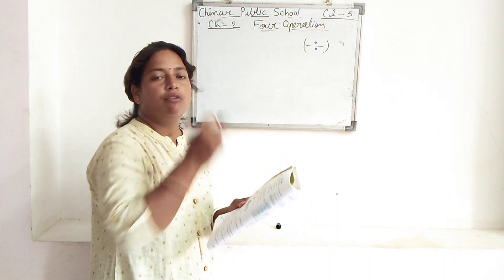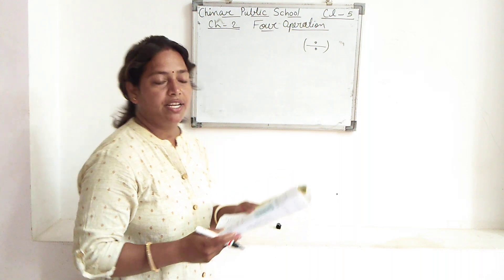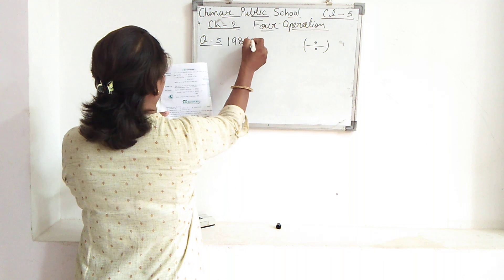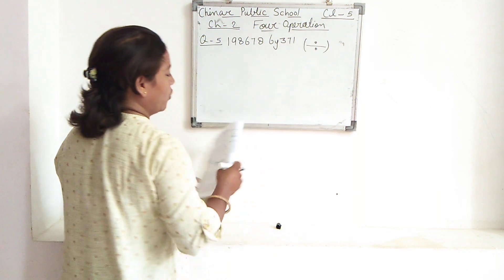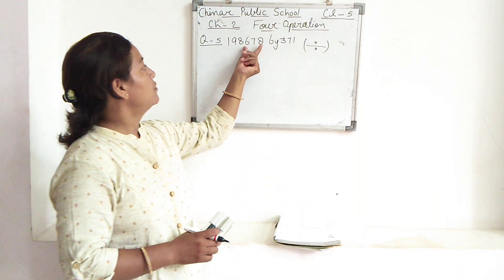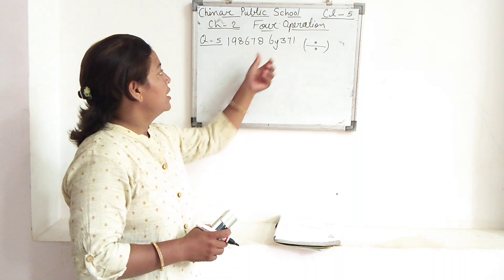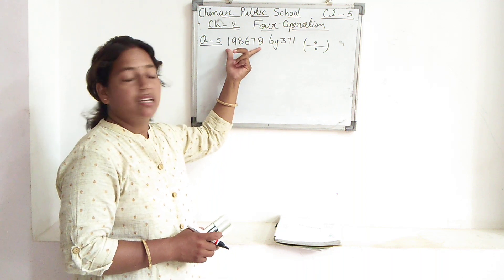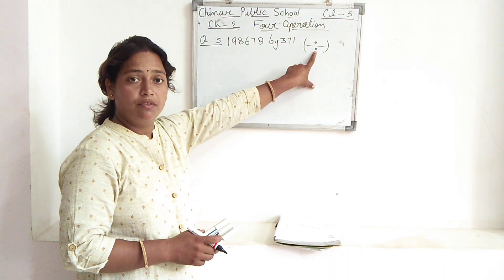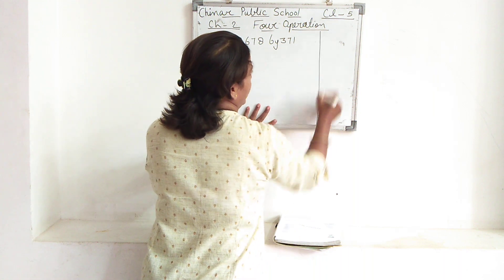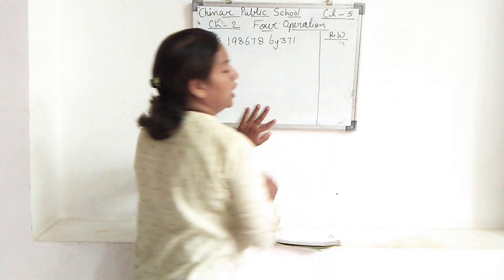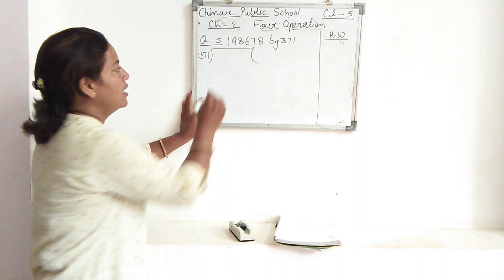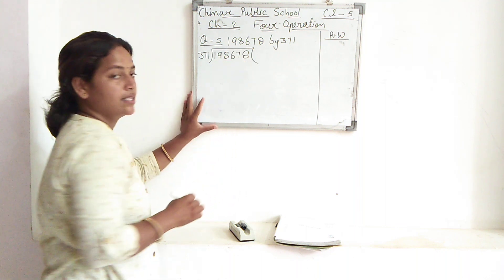Today again we are doing divide. So question number 5. Which question ma'am is taking? Question number 5: 198,678 by 371. What is the name of this number? The divisor is 371 and the dividend is 198,678. We have to divide. As I told you, to do the division we need a rough work column.